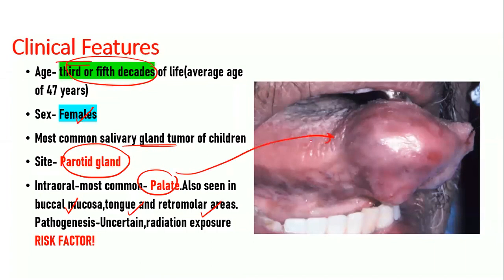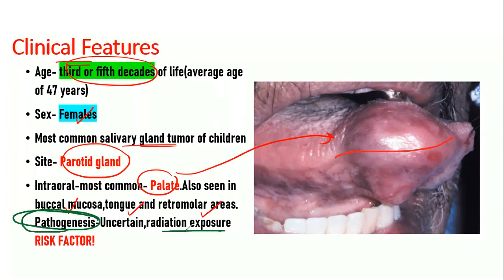In this diagram, there is a tumor arising from the lateral border of the tongue involving the dorsal surface and lateral aspect. An important point is that although the pathogenesis is uncertain, radiation exposure is a major risk factor. A history of radiation exposure is commonly found in the pathology of mucoepidermoid carcinoma.